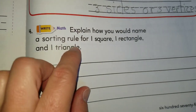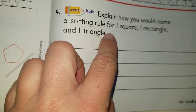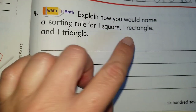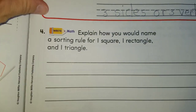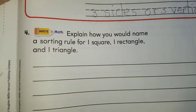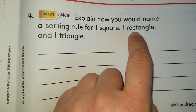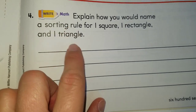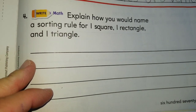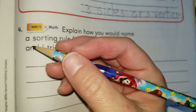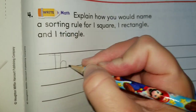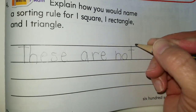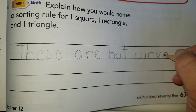Let's take a look at the last one on this page. Explain how you would name a sorting rule for one square, one rectangle, and one triangle. What's in common between a square, a rectangle, and a triangle? Well, the square has four sides and four vertices, and the rectangle has four sides and four vertices, but the triangle has only three. However, squares, rectangles, and triangles are all not curved. So we write: these are not curved.